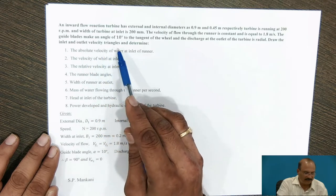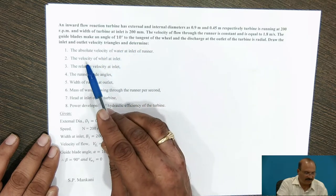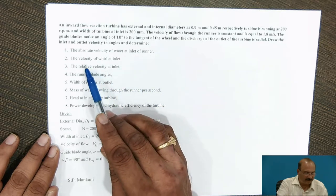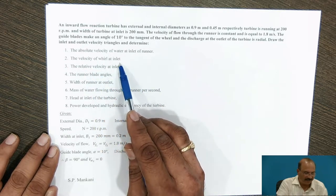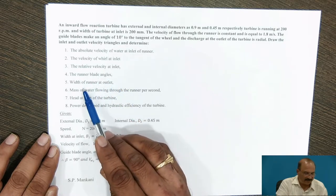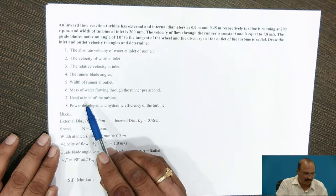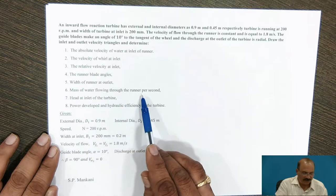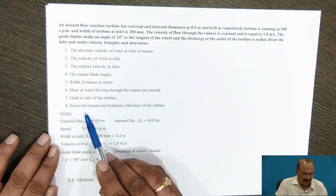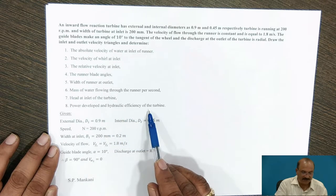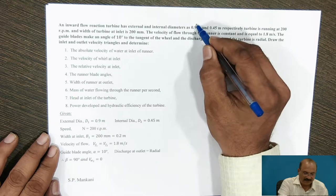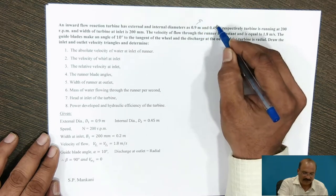Draw the inlet and outlet velocity triangles and determine: the absolute velocity of water at inlet of runner, the velocity of wheel at inlet, the relative velocity at inlet, the runner blade angles, the width of runner at outlet, mass of water flowing through the runner per second, head at the inlet of the turbine, power developed, and hydraulic efficiency of the turbine.